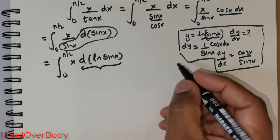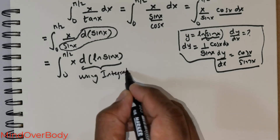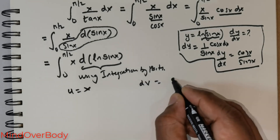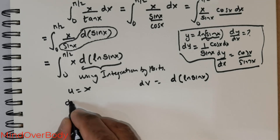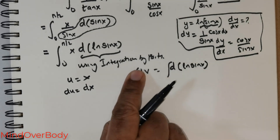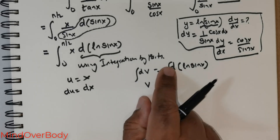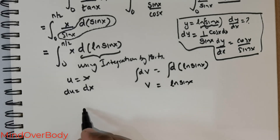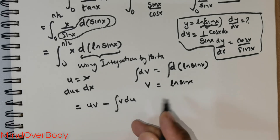We will utilize integration by parts. Taking u = x and dv = d(ln sin x), we get du = dx and v = ln(sin x). The integration by parts formula gives uv minus the integral of v du.